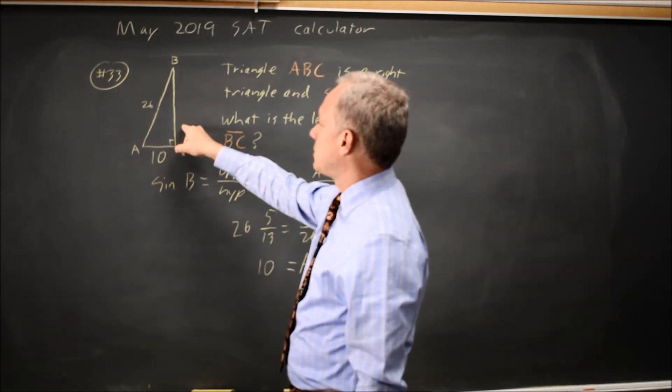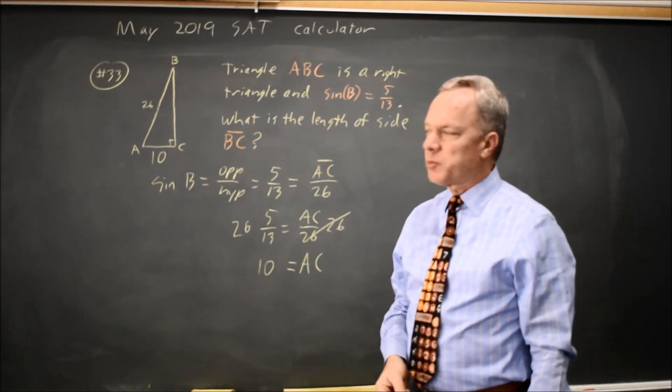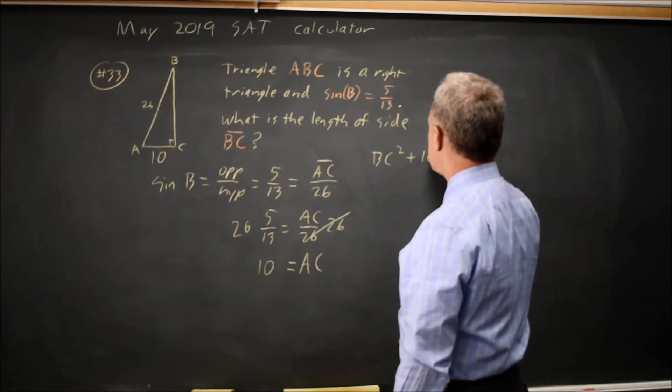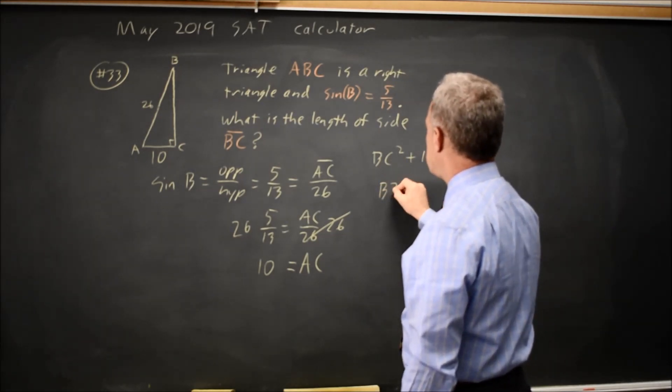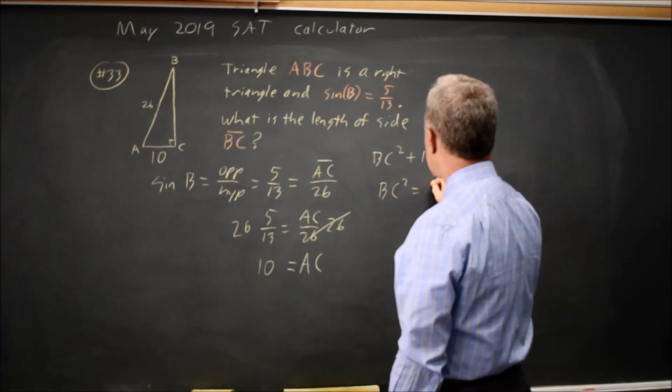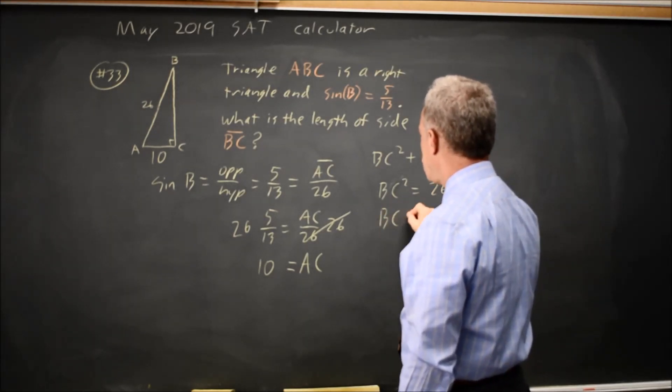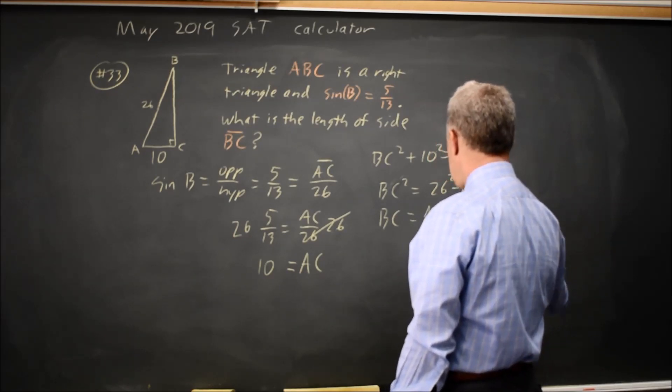I need to find BC, and you may already know this Pythagorean triple, but if you don't, BC squared plus 10 squared equals 26 squared. So BC squared equals 26 squared minus 10 squared, so BC equals the square root of 26 squared minus 10 squared.